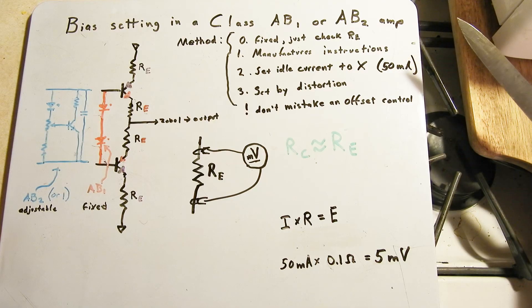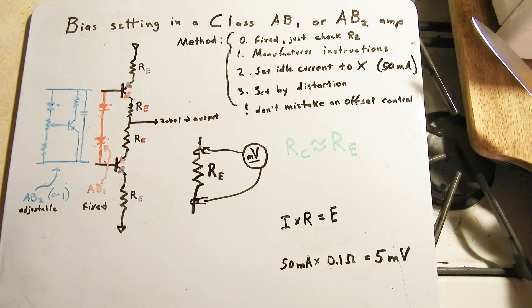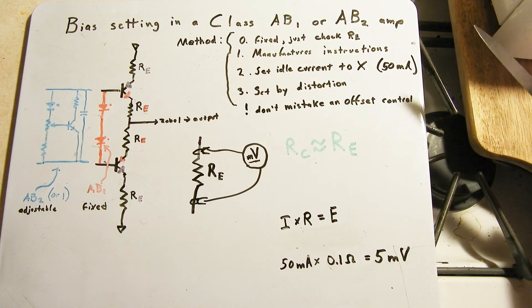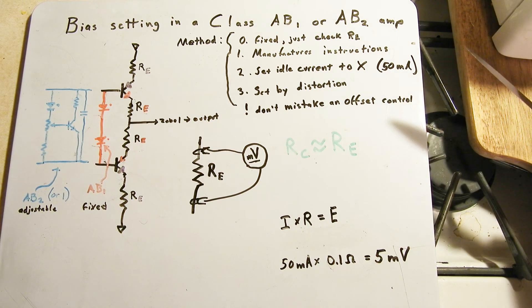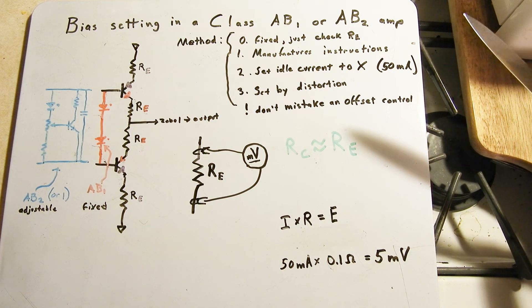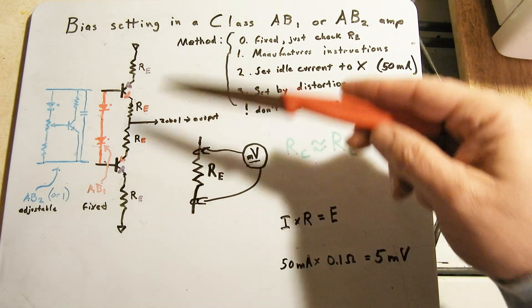I wanted to talk a little bit more about setting bias in a Class AB amplifier. This is sort of a follow-up to my last couple videos. I've talked about this in other videos about the Tigers and everything else for years. Anyway, just to go over, I've gone over this in a lot of videos, but I just want to add a little more clarity.